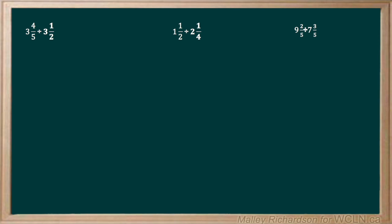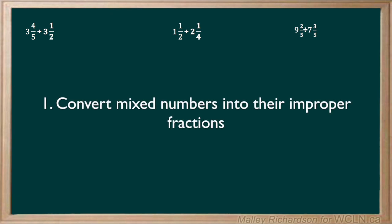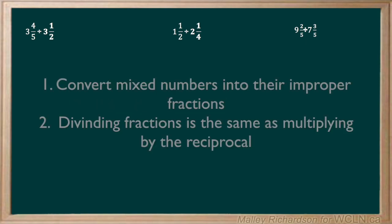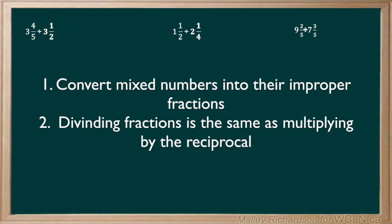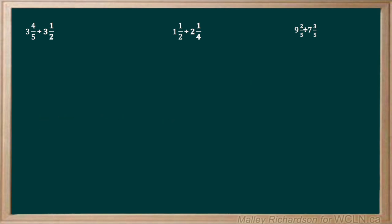These next set of problems deal with dividing mixed numbers. There are two rules we need to remember. Our first rule is that when division involves mixed numbers, we always need to convert them into their improper fractions. Our second rule is that dividing a fraction is the same as multiplying by its reciprocal. Now that we know these two rules, let's get on with the first question.